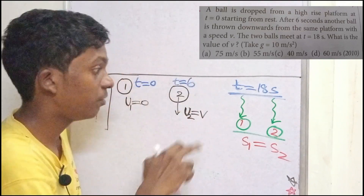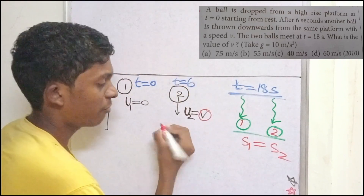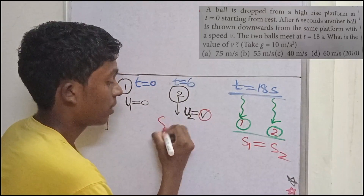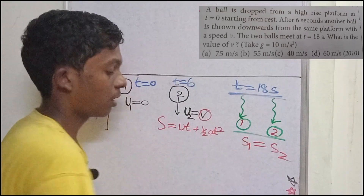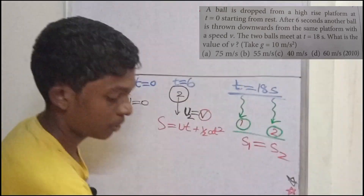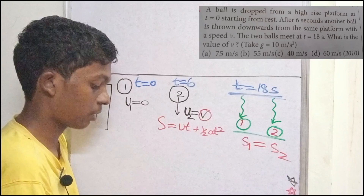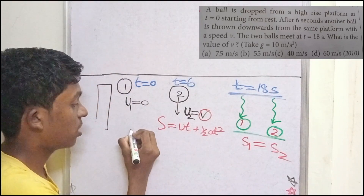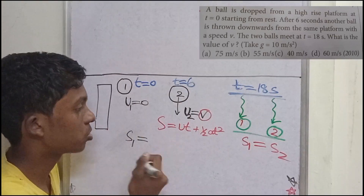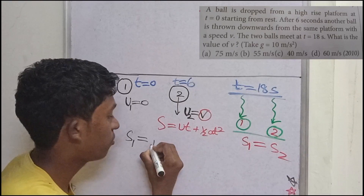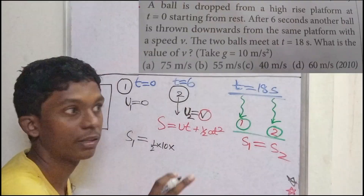We need to find the value of V. The formula for displacement is S equal to ut plus half at squared. For ball 1: S1, U equal to 0, so S1 equals half G T squared. G equal to 10, T equal to 18 seconds, so S1 equals half into 10 into 18 squared.